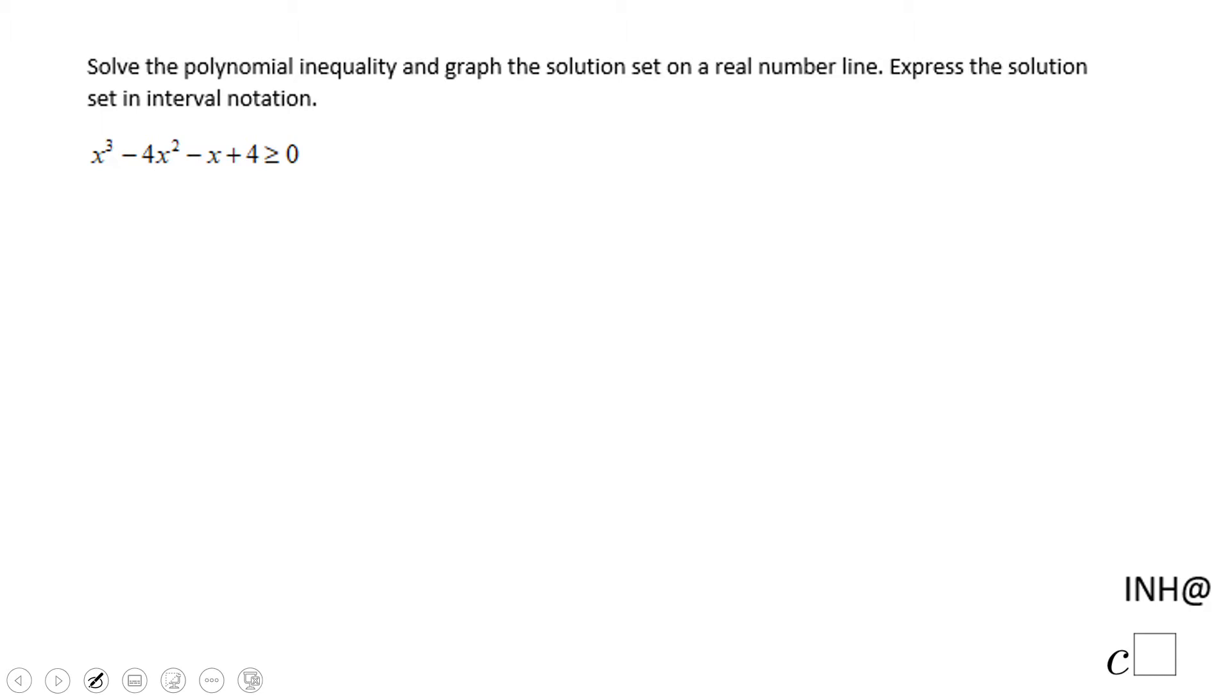The first thing I'm going to do here is to solve this polynomial equation: x³ - 4x² - x + 4 = 0.